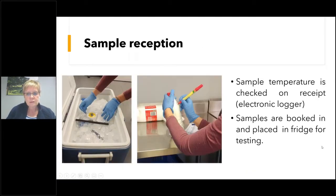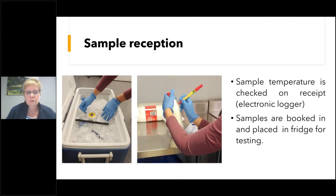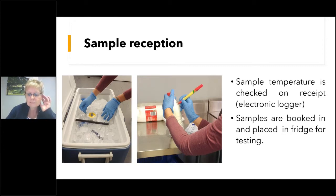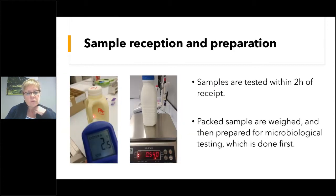Starting with sample reception: about a month ago, we did a webinar on sampling, covering the way samples are taken and kept. When we receive samples, they are kept on ice and sample temperatures are logged with an electronic temperature logger. Samples are then booked in and placed in the fridge for testing. If samples were not monitored with an electronic logger, the sample temperature can also be taken by infrared thermometer — we're all familiar with that since COVID.